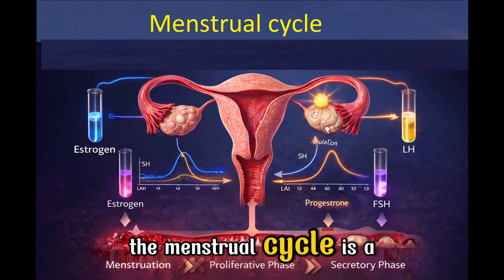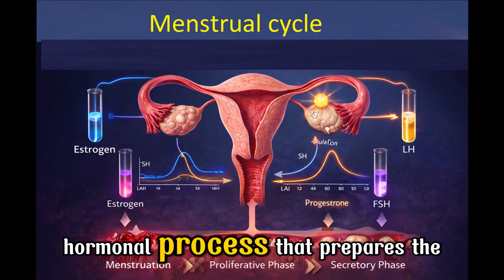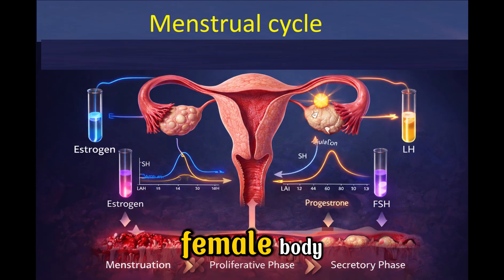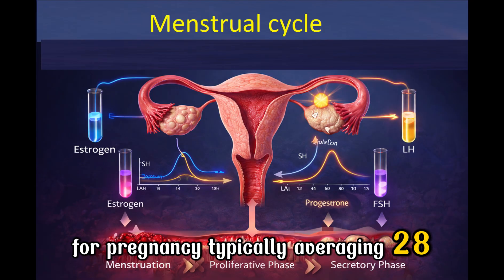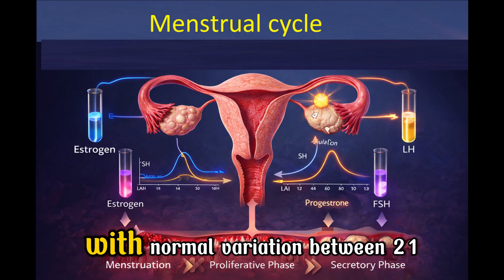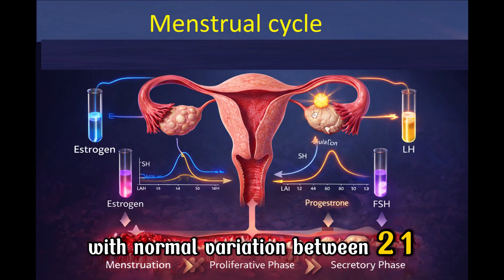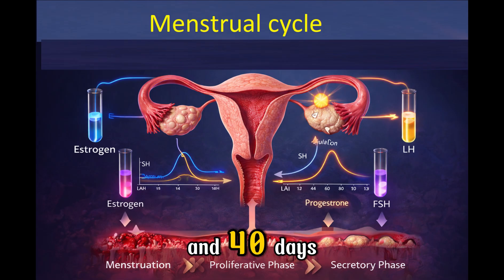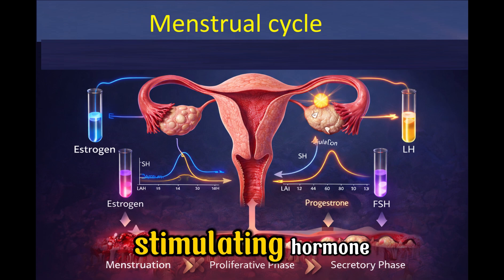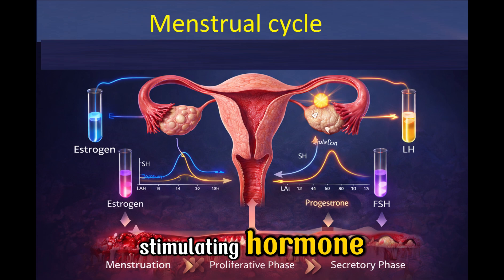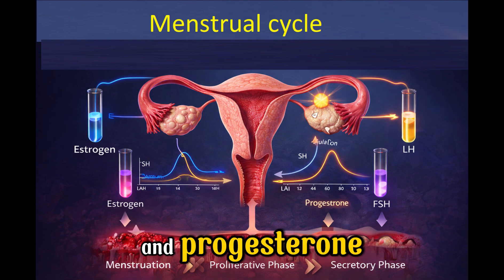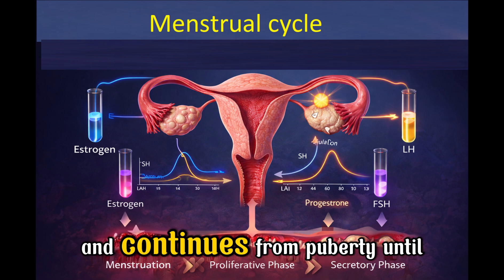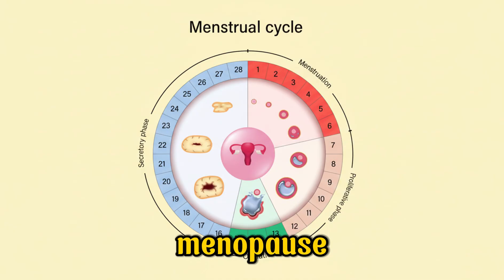The menstrual cycle is a recurring hormonal process that prepares the female body for pregnancy, typically averaging 28 days, with normal variation between 21 and 40 days. It is regulated by follicle-stimulating hormone, luteinizing hormone, estrogen, and progesterone, and continues from puberty until menopause.